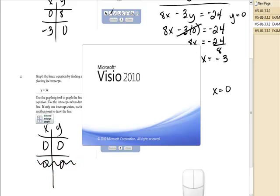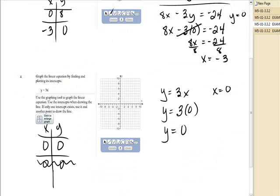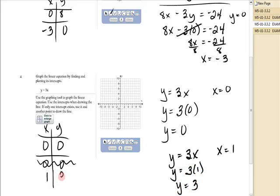I need to pick another value. I think I'll let x be 1. So I have y equals 3x. Plug in 1. Y is equal to 3 times 1. Y is equal to 3. 1, 3 is not an intercept, but you only have one intercept. And you'll notice right here, if only one intercept exists, use it and another point to draw the line. So I have 0, 0, and then I have 1, 3, and so I will have this line with a single intercept.